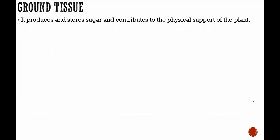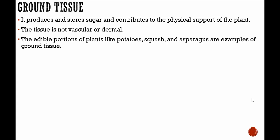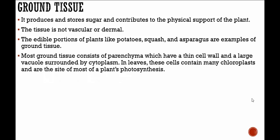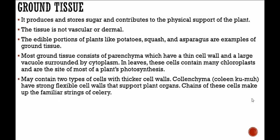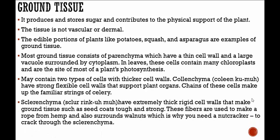Ground tissue produces and stores sugar and contributes to the physical support of the plant. The edible portions of plants like potato, squash, and asparagus are examples of ground tissue. Most ground tissue consists of parenchyma, which have a thin cell wall and a large vacuole. In leaves, these cells contain many chloroplasts, the site of most photosynthesis. Ground tissue may also contain collenchyma with strong flexible cell walls — the familiar strings of celery — and sclerenchyma with extremely thick rigid cell walls that make seed coats tough and strong, also found surrounding walnuts.